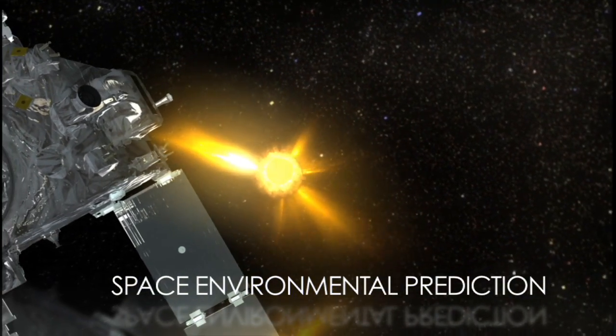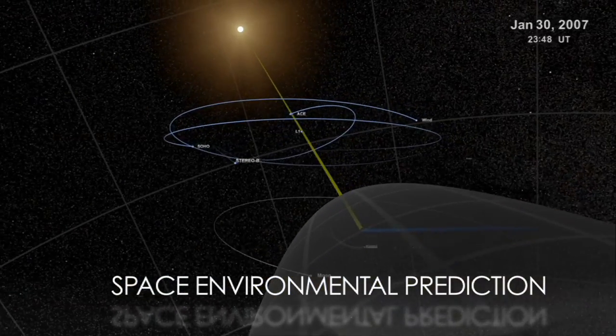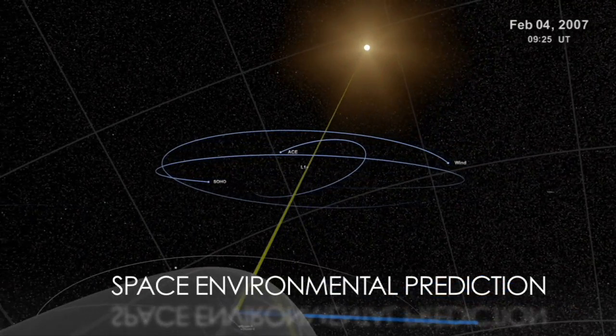In its study of heliophysics, NASA uses a fleet of satellites to take an unprecedented look at the Sun and how it affects us here on Earth.